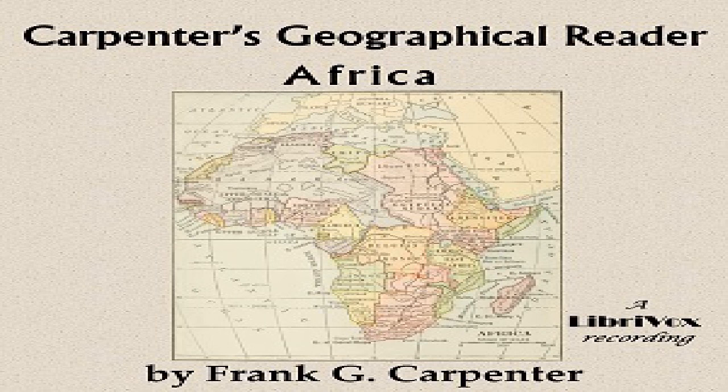Morocco. Before we cross the Strait of Gibraltar, let us take a look at the northwestern part of the African continent. This region is sometimes called Little Africa; the Arab geographers knew it as the Western Island. It is the region of the Atlas Mountains, surrounded on the west and north by the Atlantic Ocean and the Mediterranean, and on the south and east by the desert of Sahara. It comprises Morocco, Algeria, and Tunis, and has an area as great as our Atlantic states, supporting millions of people. This Atlas region is wildly mountainous, with some peaks as high as the highest of the Rockies.